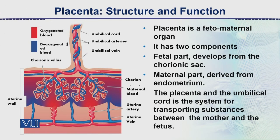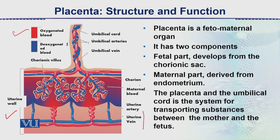The placenta is a feto-maternal organ. This is the uterine wall, and from the mother, blood flows here. Red color represents oxygenated blood while blue indicates deoxygenated blood. This is the uterine vein and this is the uterine artery. Blood from the mother goes into spaces where islands or pools form - small tanks of blood - and blood circulates inside these spaces. Within this blood, the chorionic villi, which divide and re-divide into a branching structure, contain fetal blood circulating inside the mother's blood pools.